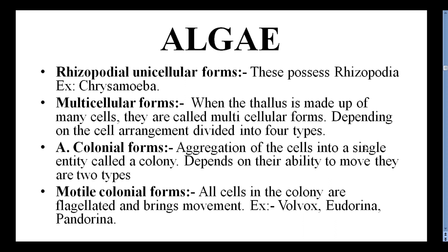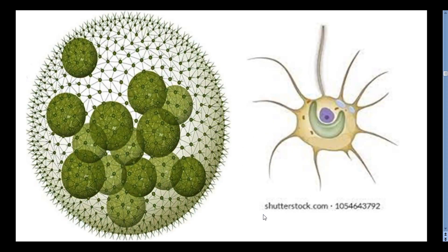The first type is Colonial Forms. The aggregation of cells into a single entity is called a Colony. Depending on their ability to move, these are divided into Motile Colonial Forms and Non-Motile Colonial Forms. In Motile Colonial Forms, all cells in the colony are flagellated and bring about movement. Examples include Volvox, Eudorina, and Pandorina. Non-Motile Colonial Forms, such as Tetraspora, are non-flagellated colonial forms.